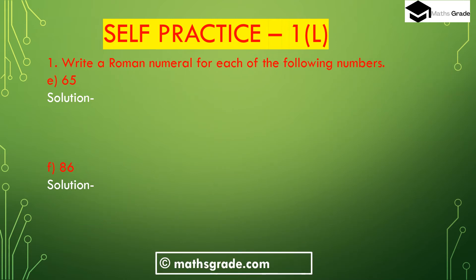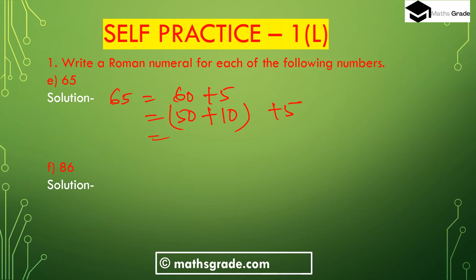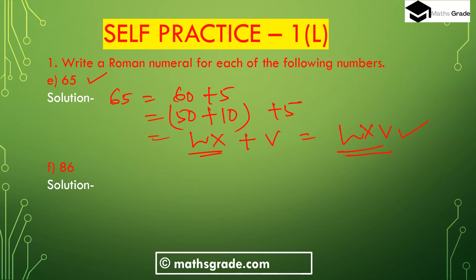Part (e): 65. We write 65 as 60 plus 5. Here 60 is 50 plus 10. Since there is addition, we write the Roman numeral of 50 first, which is L, then 10 which is X, giving LX. Adding 5 (V) gives LXV. So 65 in Roman numerals is LXV.